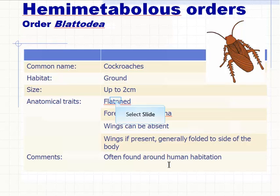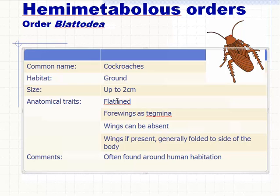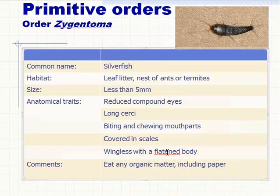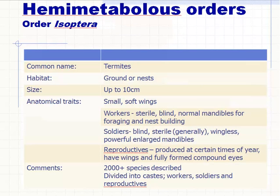Dictyoptera — cockroaches — more of a nuisance in dwellings. Cockroaches are not known to be a pest of vineyards per se, but potentially in wineries — I've seen cockroach problems in wineries, not where it would taint wine directly, but certainly as a nuisance, and they can get into things like demijohns or small variable-capacity tanks and potentially taint wine from there. Wings can be absent but are generally present and folded onto the back of the organism.